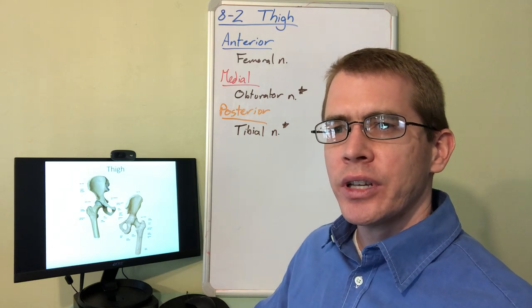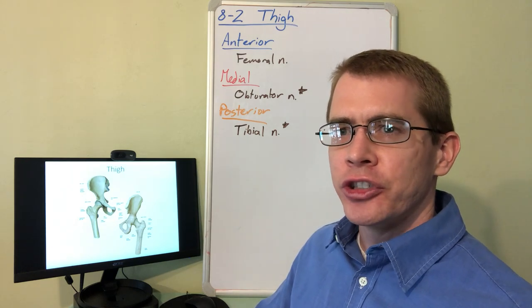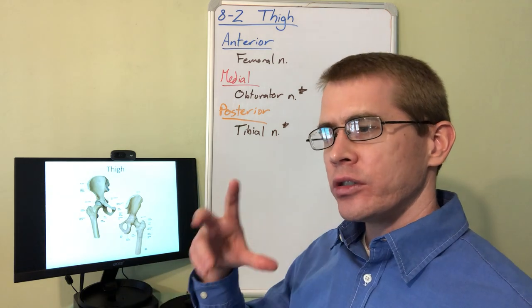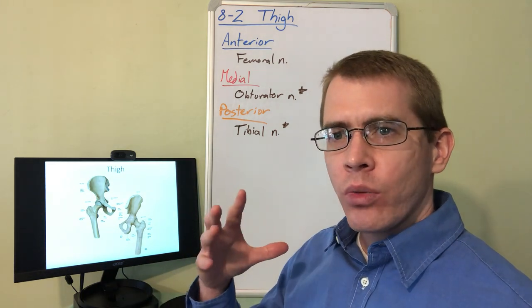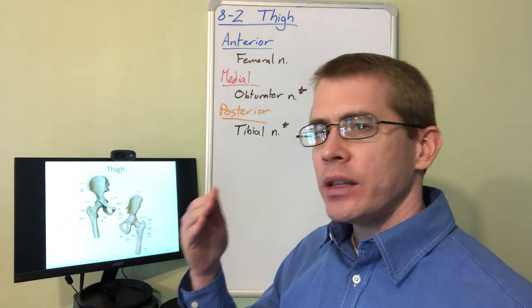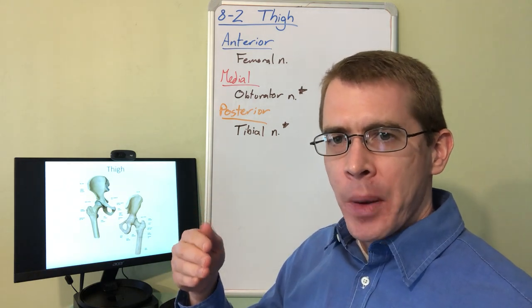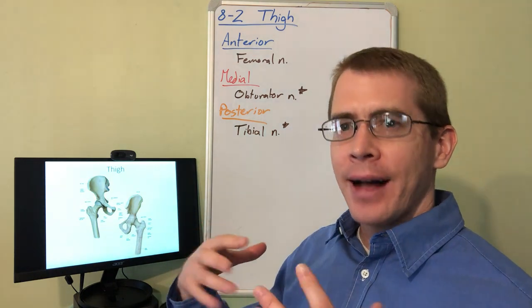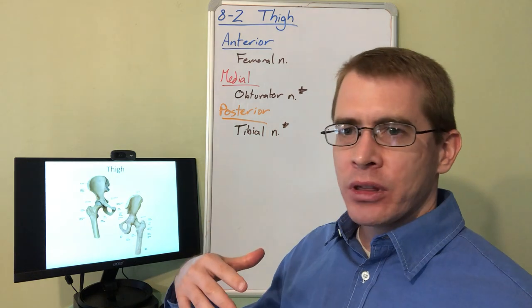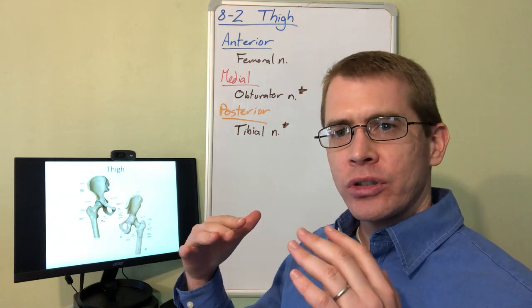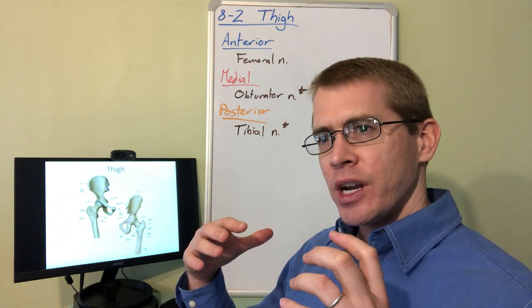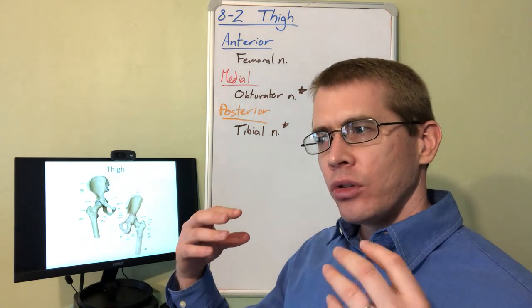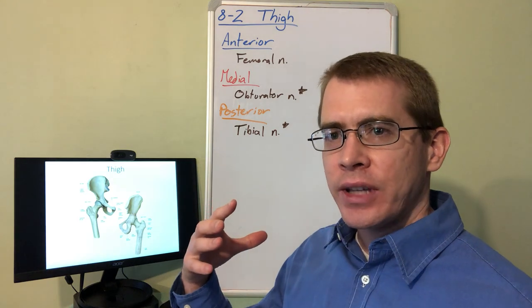Okay everyone, let's take a look at lecture 8-2 which is the thigh. When you start to learn about the thigh, what I want you to do is make analogies with the upper limb. The Hox genes and programs that segment the body have similar programs that regulate both the upper and lower limb, so a lot of these structures look similar.